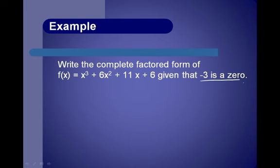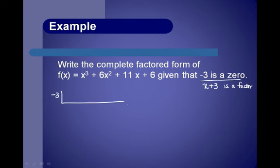If negative 3 is a zero, that means x plus 3 is a factor. What we need to do is find the other factor by dividing by x plus 3, using synthetic division by negative 3. When we set this up: leading coefficient 1, starting with x to the third, 6x squared, 11x, plus 6.